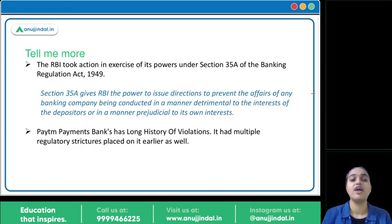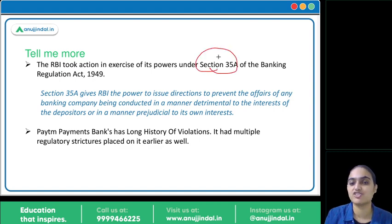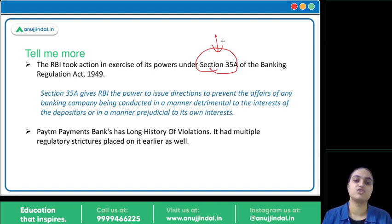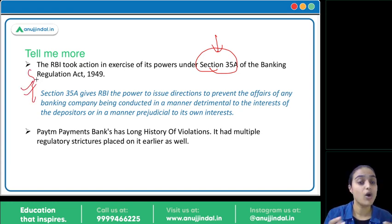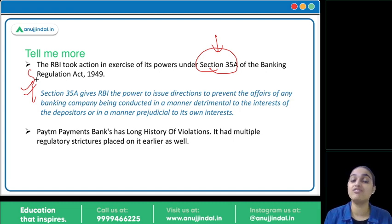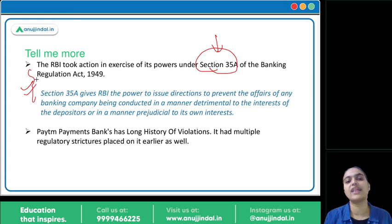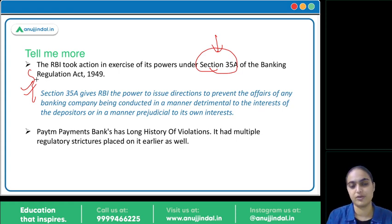Regarding RBI's power to restrict a bank from onboarding new customers: Section 35A of the Banking Regulation Act gives RBI the power to issue directions to any banking company if something is going on that is not in the interests of depositors. Under this section, the restriction has been imposed on Paytm Payments Bank. This is not the first time — regulatory strictures have been imposed on Paytm Payments Bank multiple times since its inception, including penalties, requiring them to improve compliance with regulations.